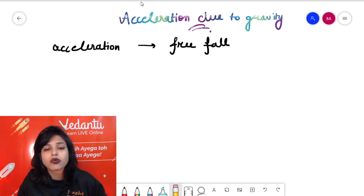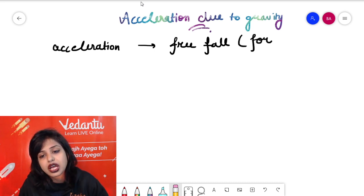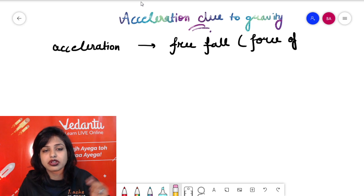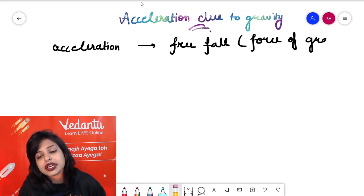When a body is falling only and only under the action of the force of gravity, then the acceleration acting on the body is the acceleration due to gravity.